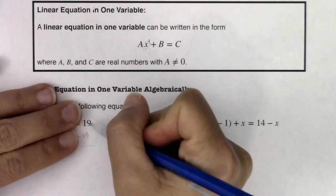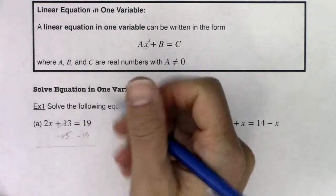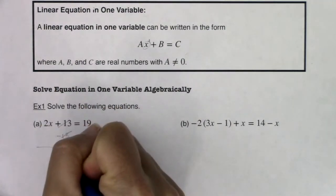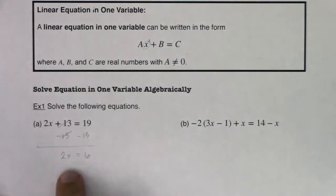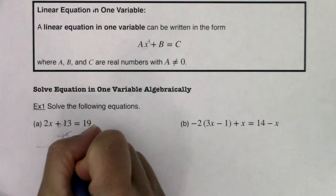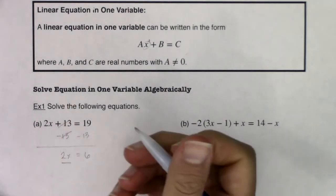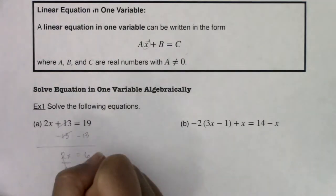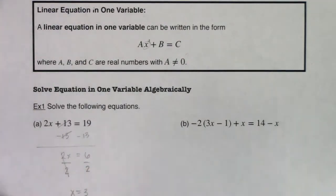On the right side, we have 19 - 13, which gives me 6. The 13s cancel, leaving me with just 2x. x is being multiplied by 2, so I'd like to undo that. The inverse operation to multiplication is division, so I'm going to divide both sides by 2. The 2s cancel, and x is equal to 3.